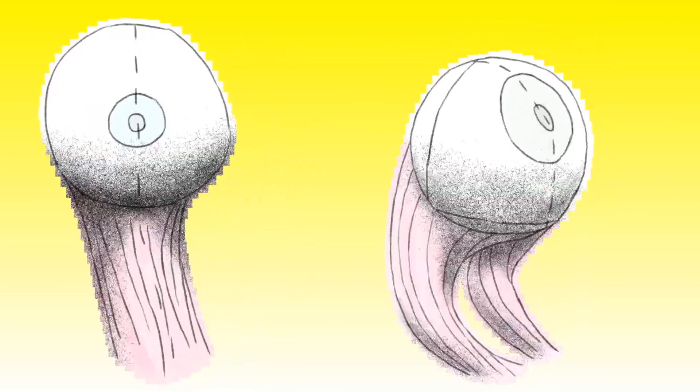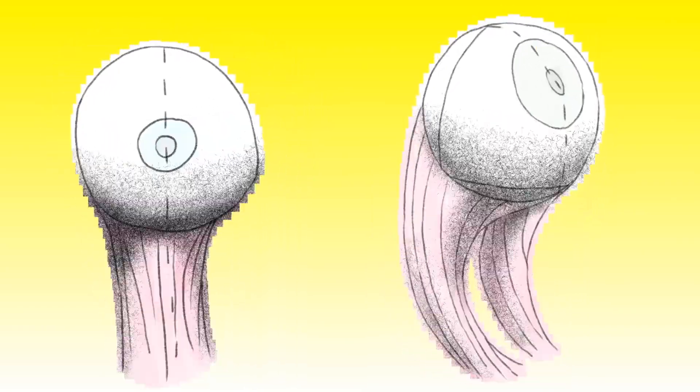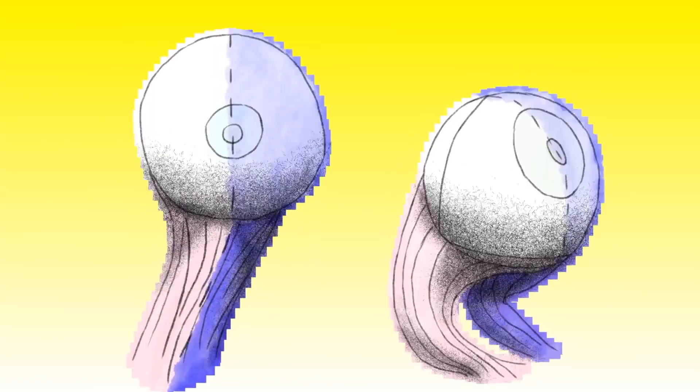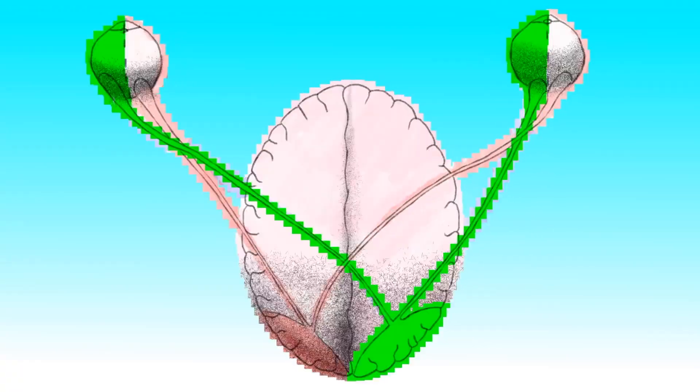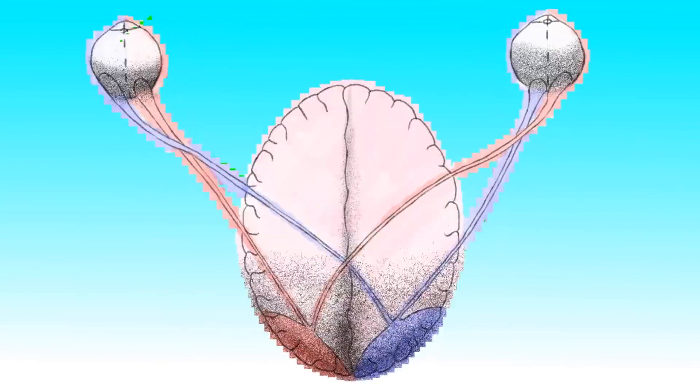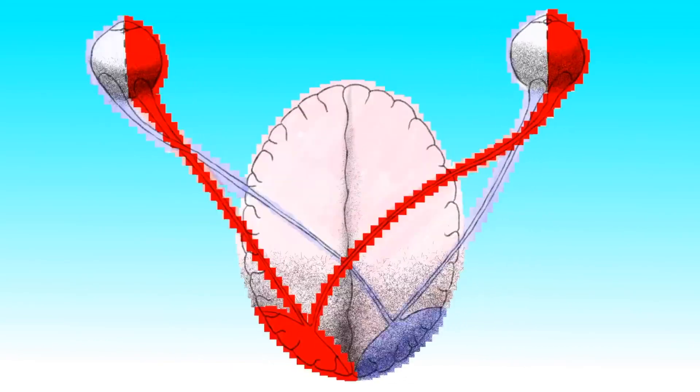The visual system is even more complex. Each eye has a left and right visual field. Both left visual fields are sent to the right side of the brain, and both right fields are sent to the left side. So the brain uses both sides to make a complete image of the world.